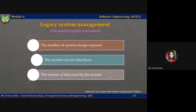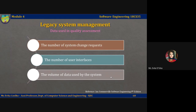You may also collect data to help judge the quality of the system. Useful data includes: the number of system change requests — system changes usually corrupt or degrade the system structure, so the higher this accumulated value the lower the quality of the system. Second, the number of user interfaces — in forms-based systems, more interfaces means more likelihood of inconsistencies and redundancies. Third, the volume of data used by the system — the higher the volume of data, the more likely there will be data inconsistencies that reduce system quality.